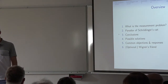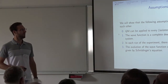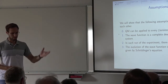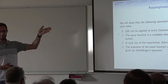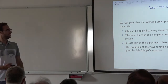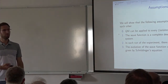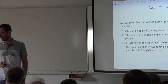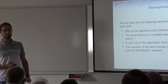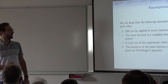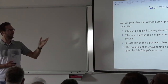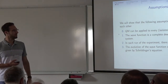So let's start at the beginning: what is the measurement problem? The measurement problem consists in the following: that we have a bunch of assumptions, and we will see that they are contradictory. The first assumption — and I even put this as an assumption here — is that quantum mechanics can be applied to every isolated physical system.